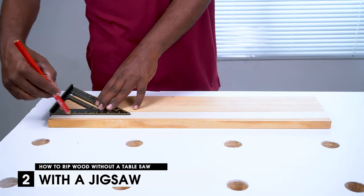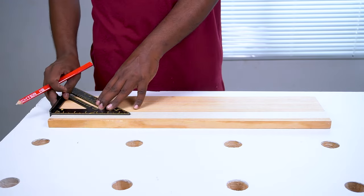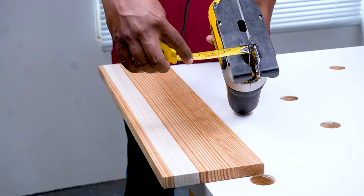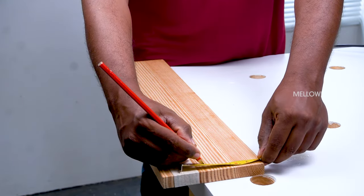Place the wood on top of the work surface and draw a cut line along the length for ripping. Next, measure the distance from the base of the saw to its blade. Transfer this offset distance to the wood.